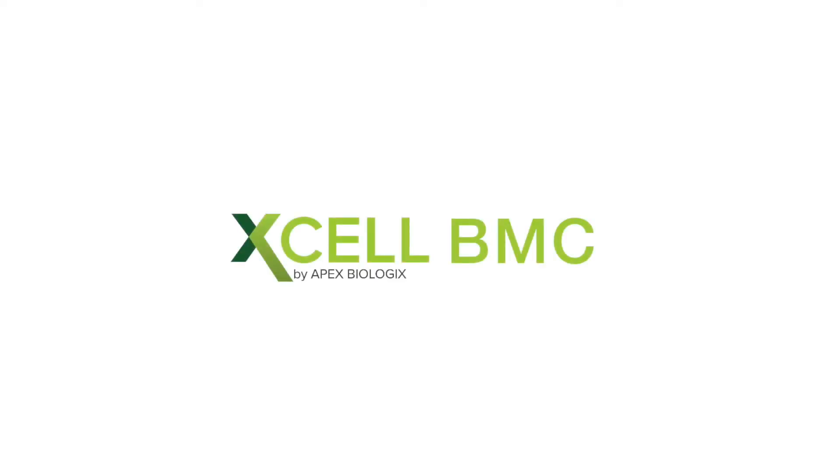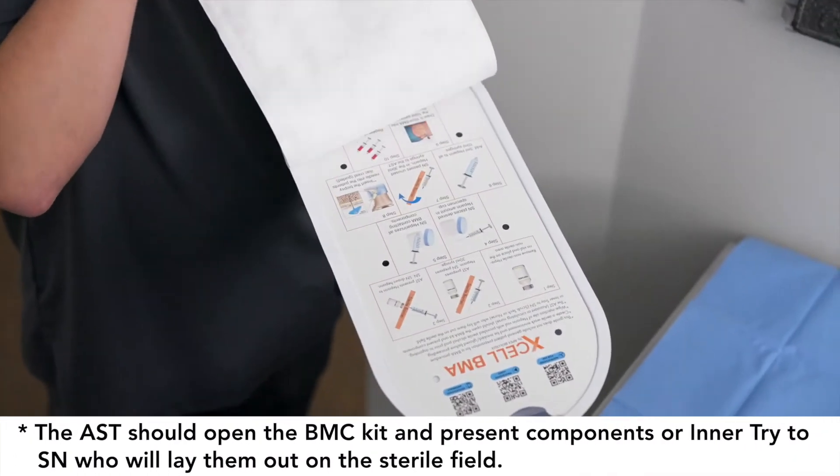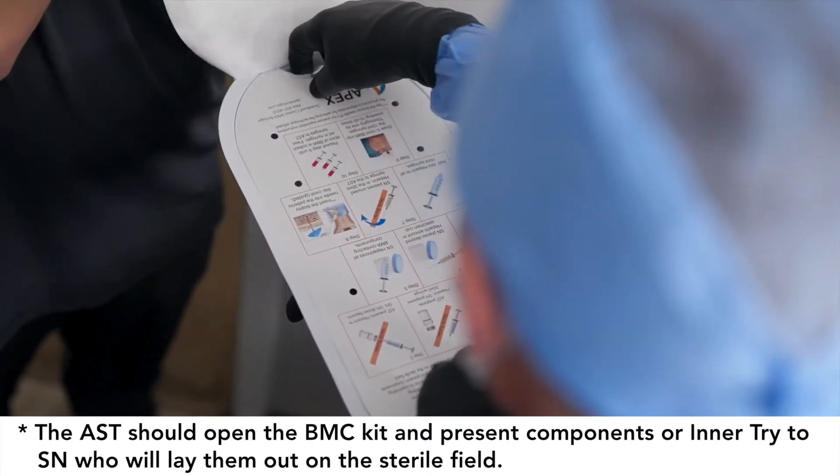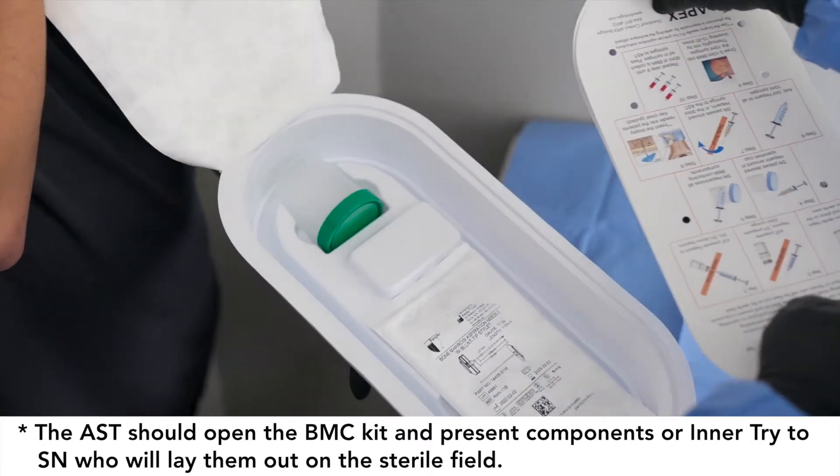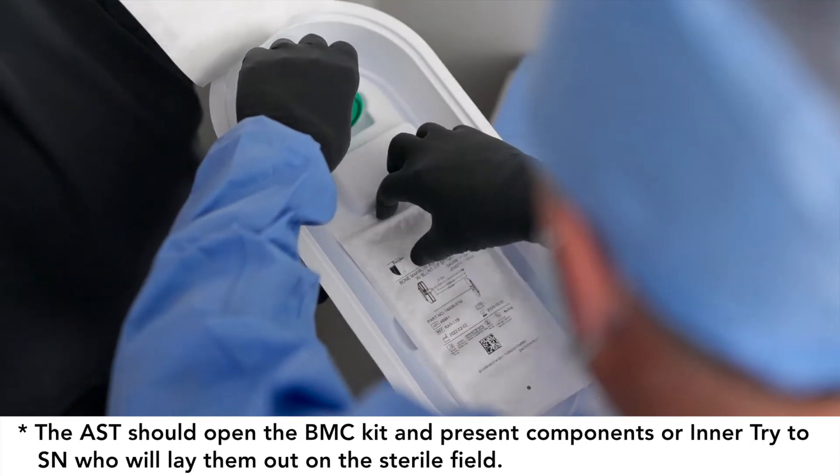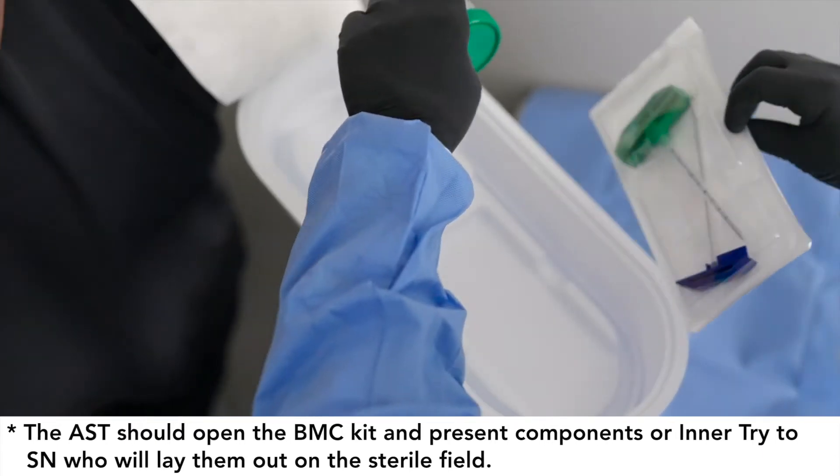All equipment used in the procedure room is understood to be sanitized to current federal standards. Create a sterile work environment and be masked and gloved before proceeding. The assistant or circulating nurse should open the XL bone marrow concentrate kit and present components of the inner tray to the scrub tech or nurse who will lay them out in the sterile field.